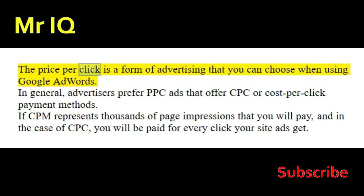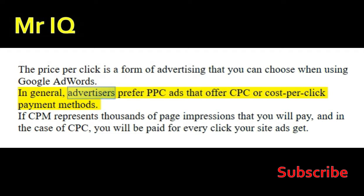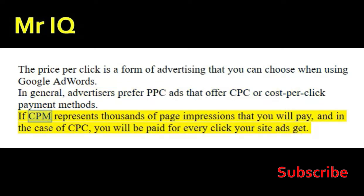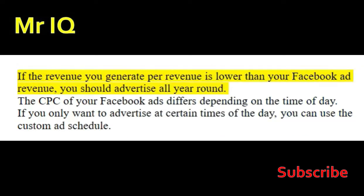The price per click is a form of advertising you can choose when using Google AdWords. In general, advertisers prefer PPC ads that offer CPC or cost per click payment methods. If CPM represents thousands of page impressions that you will pay, in the case of CPC you will be paid for every click your site ads get.